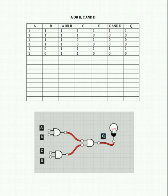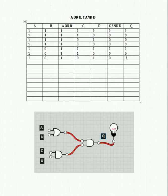Now we have A ON, B OFF, C OFF, D ON. A or B is still 1. C and D: 0 and 1 for an AND gate gives us 0. So the input to the final AND gate is 1 and 0, giving us 0.